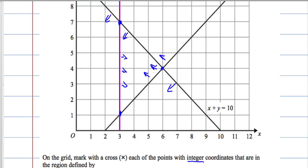OK, so I'm going to mark with a cross the points with integer coordinates that are in the region. So that's got integer coordinates, that's got integer coordinates, integer coordinates, and integer coordinates. So they're the four points that we're looking for.